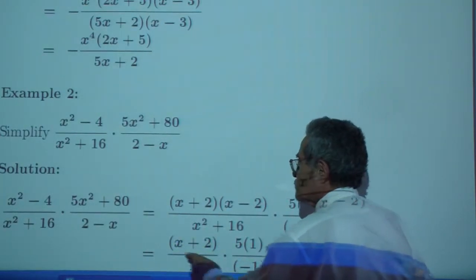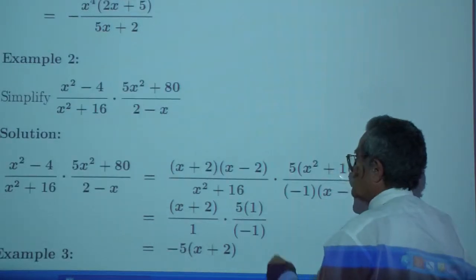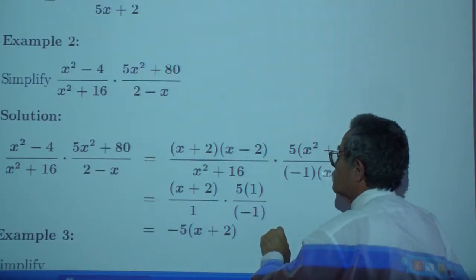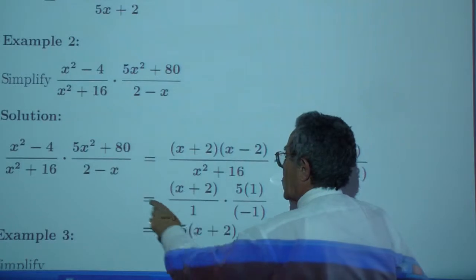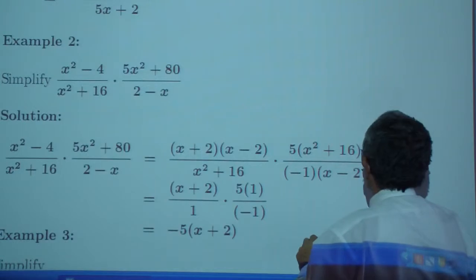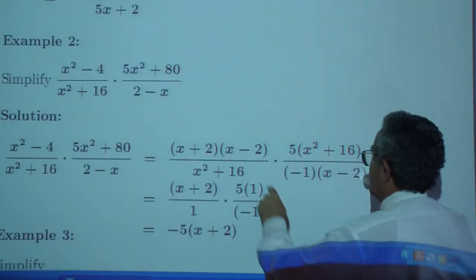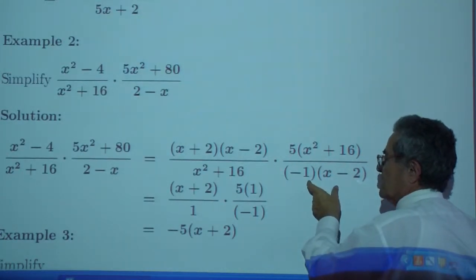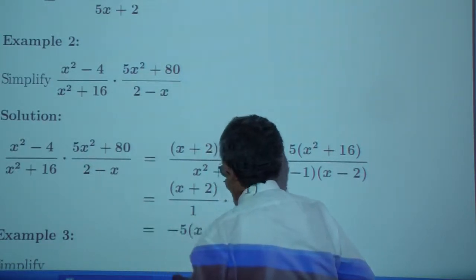And negative x minus 2, so you have x minus 2. And you have 2 minus x, that becomes negative 1. Write x minus 2, x minus 2. And you have to factor out the negative 1. So negative 1 times x minus 2 is the same as 2 minus x.